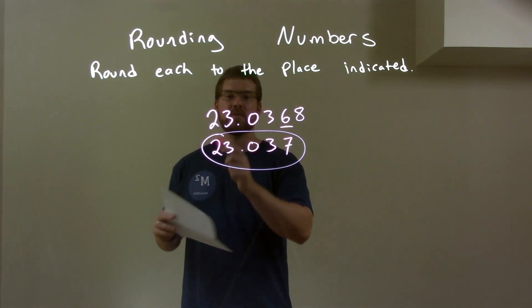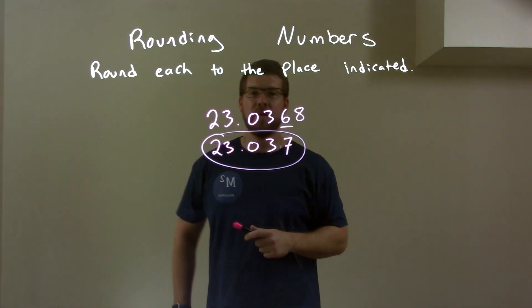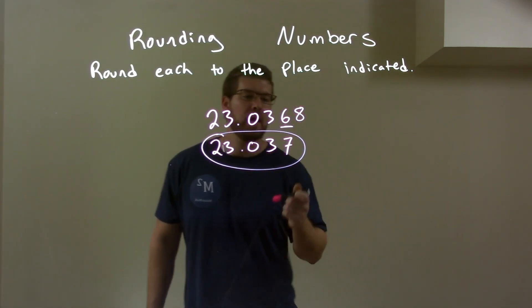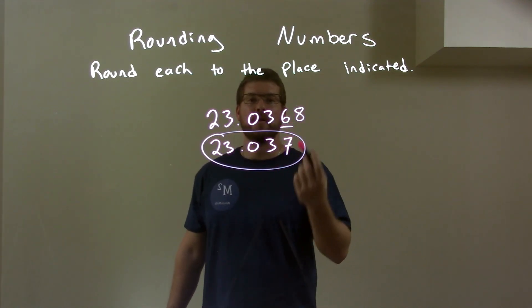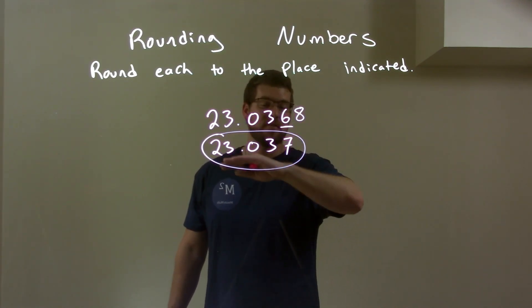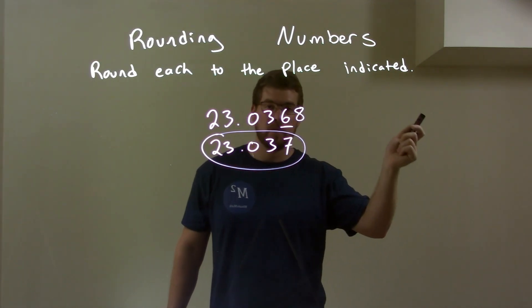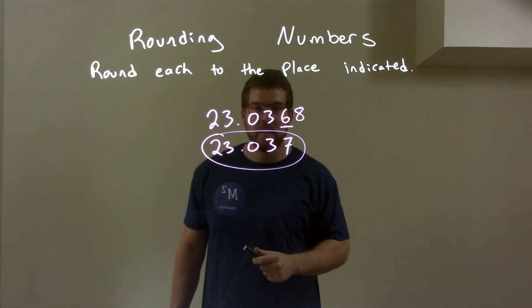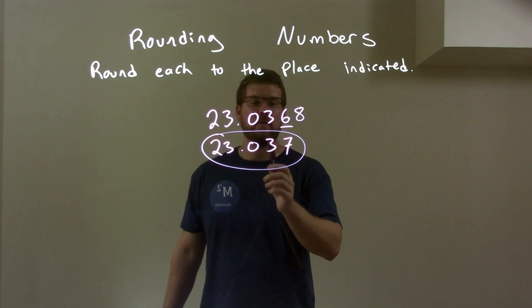So, quick recap. We're given 23.0368. We're rounding at the 6. The 8 on the right causes the 6 to round up to the 7. Everything else just comes down. 8 disappears. And again, we have a rounded answer of 23.037.